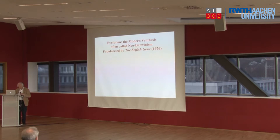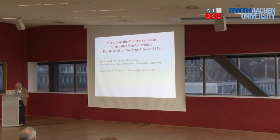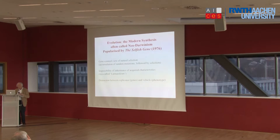Let's now move on to the implications of these observations for the popular view of evolution — the gene-centered view: accumulation of random mutations followed by selection, which is entirely sufficient. I'm not saying that the standard story doesn't happen at all; I'm saying that often there are processes that break that particular rule, if it's interpreted as the only way evolution can occur. It also supposes the impossibility of the inheritance of acquired characteristics — sometimes called Lamarckism — and distinguishes between the replicator, the genes defined as DNA, and the vehicle, which is the phenotype.